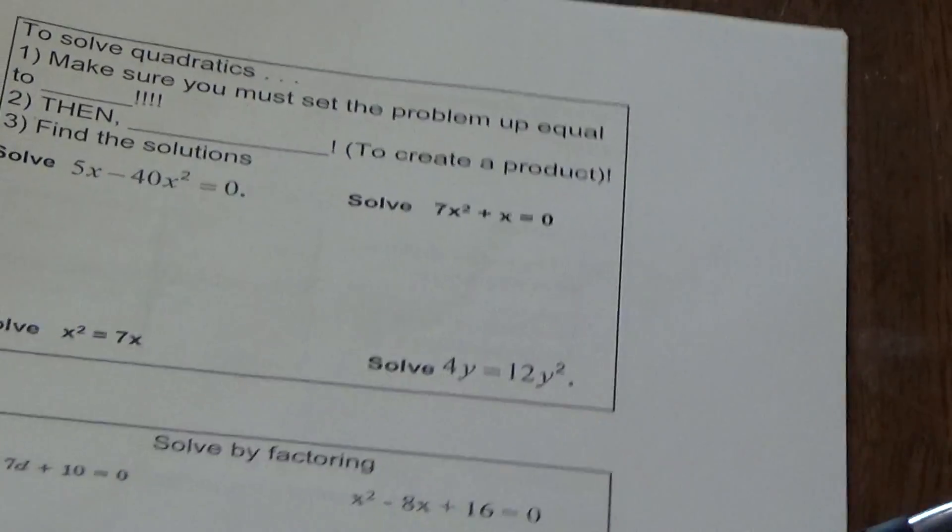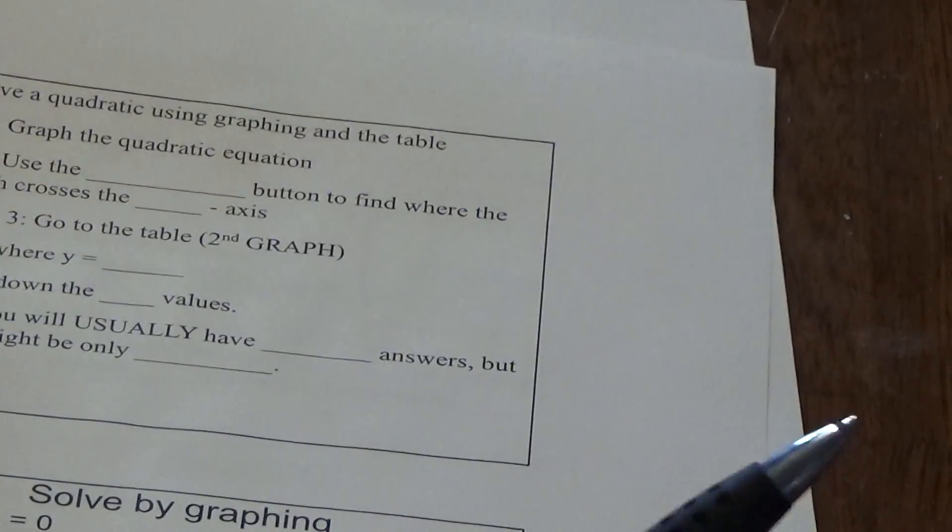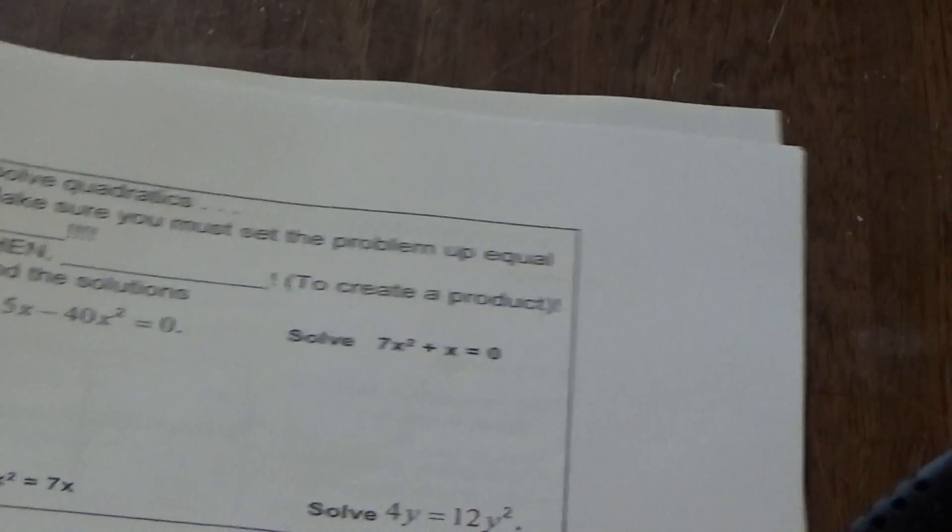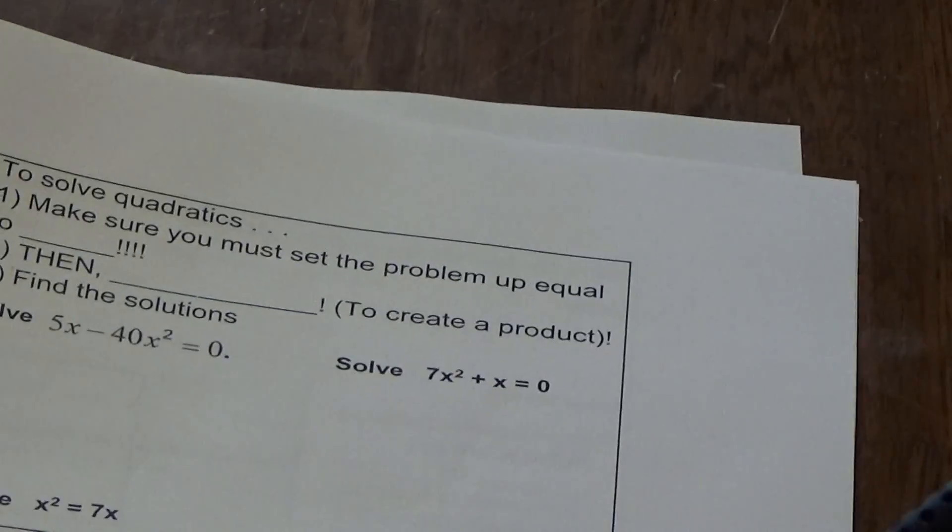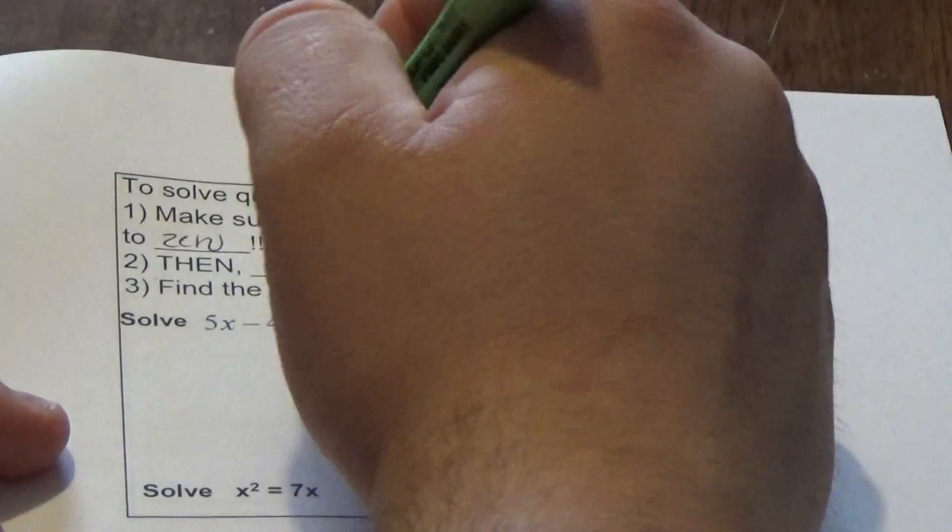In order for us to solve quadratics, we can do two methods: we can do our factoring, which is what we're going to go over on the front, or we can use a graph, which is what we're going over with the last four slides. Let's go over solving using just straight up factoring first. We have to make sure that we set the problem equal to zero.